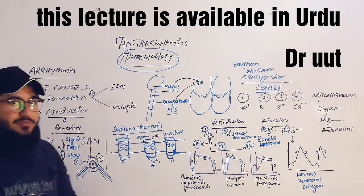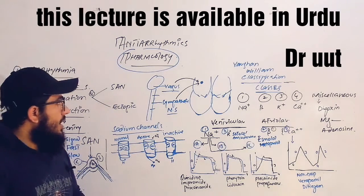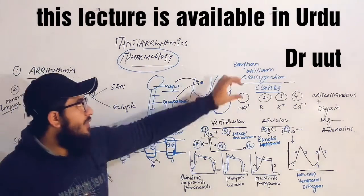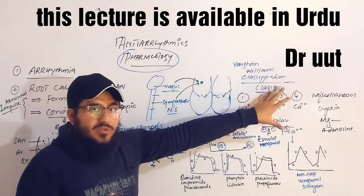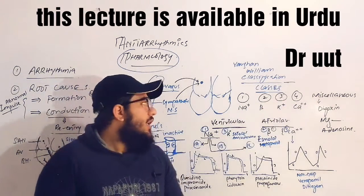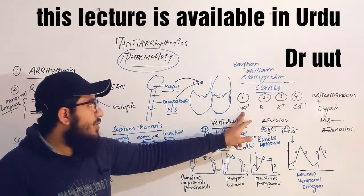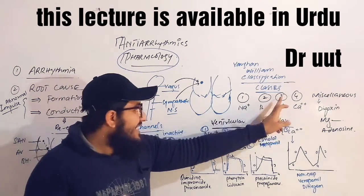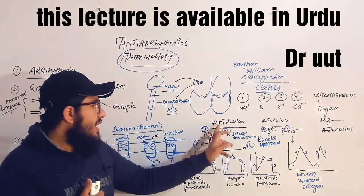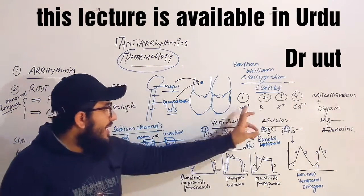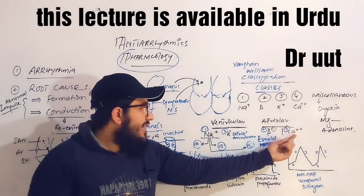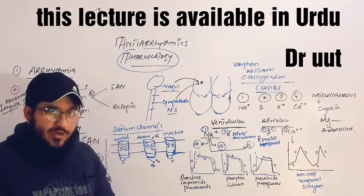This arrhythmia is treated by means of the Vaughan Williams classification of drugs. According to this classification, there are four classes plus one miscellaneous class. Class 1 contains sodium channel blockers, Class 2 beta blockers, Class 3 potassium channel blockers, and Class 4 calcium channel blockers. For ease, these drugs can be divided into ventricular-acting drugs (Classes 1 and 3) and atrial-acting drugs (Classes 2 and 4, specifically on the sinoatrial node).